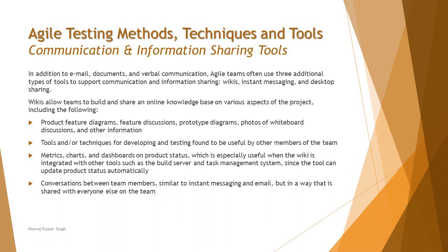Wikis generally allow the team to build up a knowledge source or documentation — the manual of the product, the process, or any kind of supporting material can be stored there. Even in the common use of Jira in an agile environment, we have a Confluence page where you can include and upload a lot of information about your process and documentation. So a wiki becomes a source that can include product feature diagrams, feature discussions, prototype diagrams, designs, requirements, user stories, and many other things.